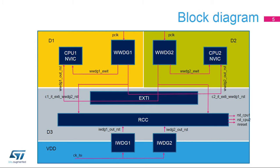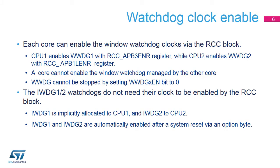The IWDGs are ideal solutions to recover from unexpected software or hardware failures. Each core can enable the window watchdog clocks via the RCC block. Setting the WWDG1 EN bit in the RCC APB3 ENR register enables the WWDG1 block clock, while setting the WWDG2 EN bit in the RCC APB1 LENR register enables the WWDG2 block clock. The software cannot stop WWDG1 and WWDG2 downcounting by setting the WWDG1 EN and WWDG2 EN bits to 0, respectively. Note that none of the cores can enable the window watchdog managed by the other core. The independent watchdogs do not need their clock to be enabled by the RCC block.